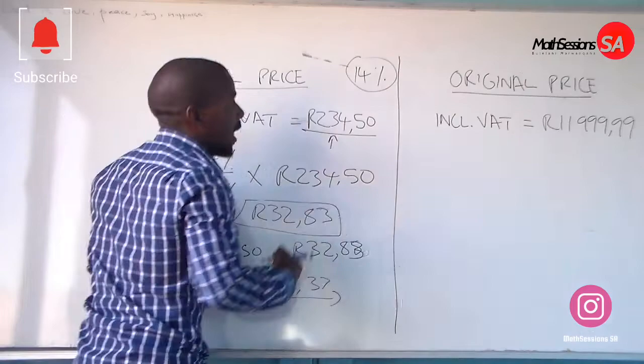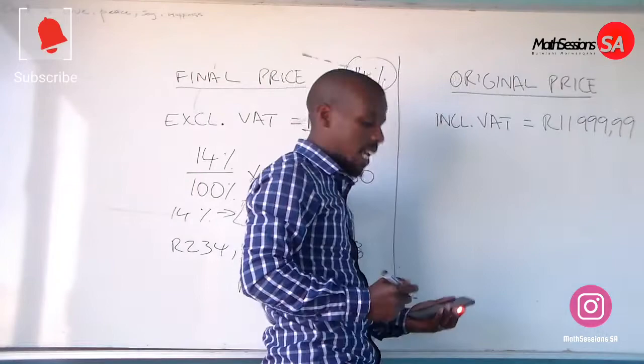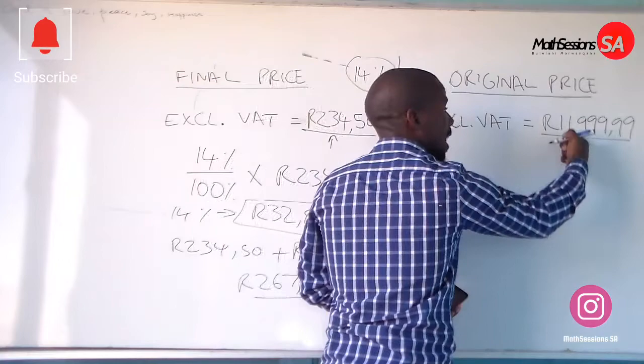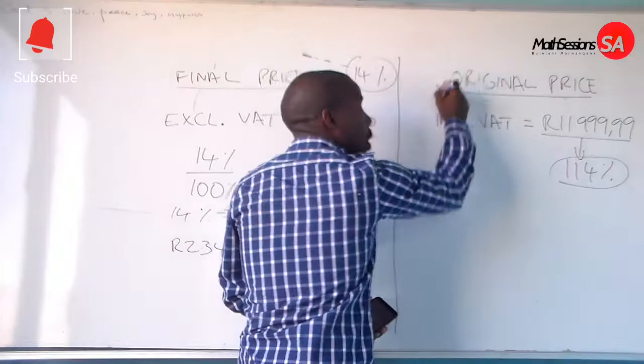So let us go along and find the original price when we already have a price that has VAT included. We are having R1199.99. Now, if this price already has VAT added, it means it includes 100% plus the 14% VAT. So this represents 114% — it is not our original price, which is the one we want to calculate.